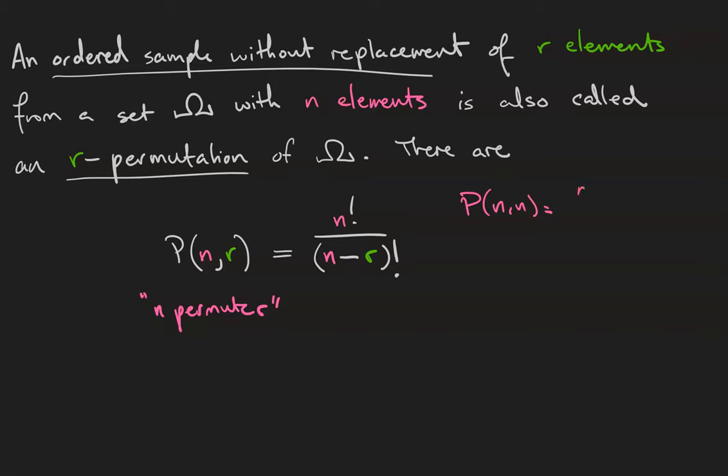Well, by the formula that's n factorial over n minus n factorial, which is n factorial over 0 factorial. 0 factorial is 1, so that leaves n factorial as desired.